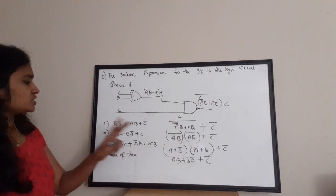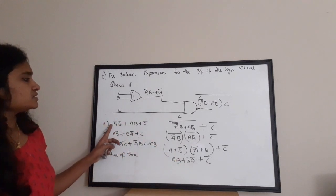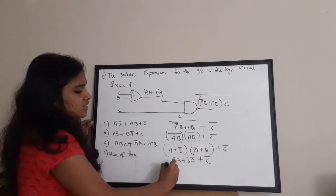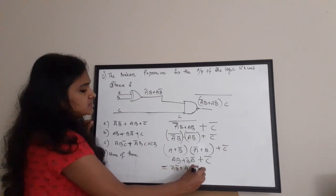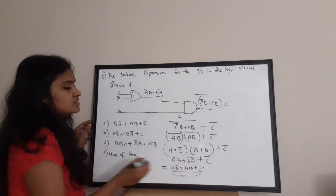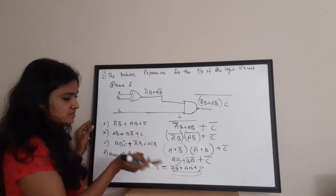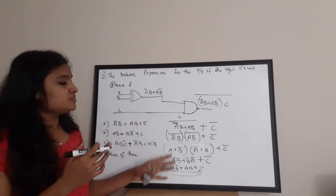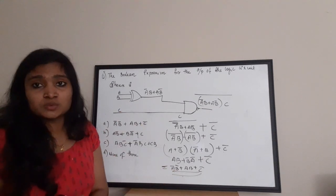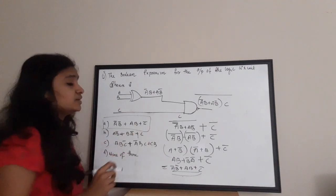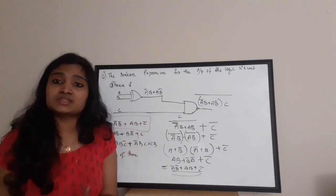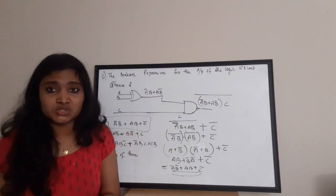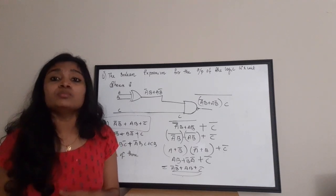Rearranging this result as ĀB̄ + AB + C̄, we can see that this matches Option A exactly. So the correct answer is Option A: ĀB̄ + AB + C̄. This Boolean simplification relied entirely on De Morgan's theorem, which is essential for almost all logic simplifications.